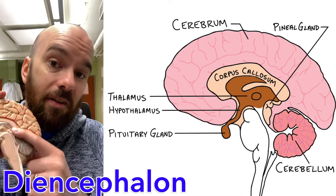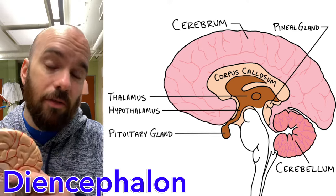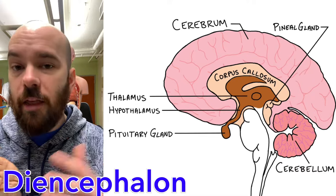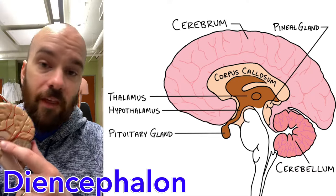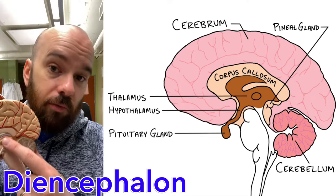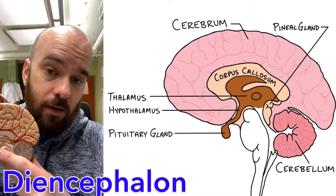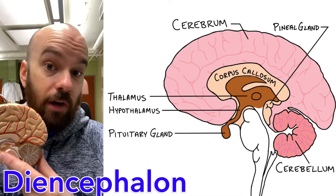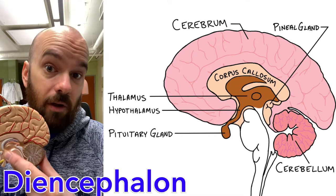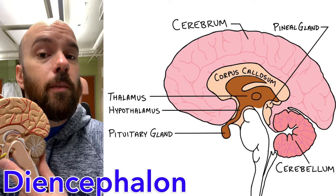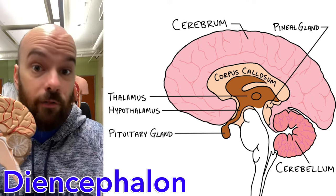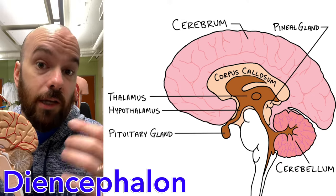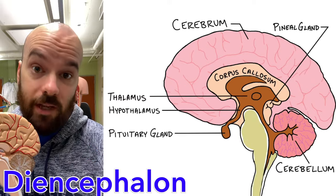So that pineal gland regulates your sleep cycle through the release of melatonin. To recap, those four parts of the diencephalon are: the thalamus, which works as a relay station between the spinal cord and the brain; the hypothalamus, which is in charge of regulating homeostatic processes throughout the body; the pituitary gland, which controls all of the other endocrine glands; and the pineal gland, which helps regulate your sleep cycle.